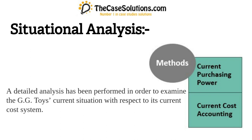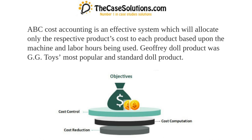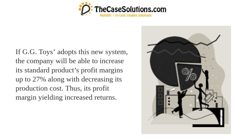A detailed situational analysis was performed to examine GG Toys' current situation with respect to its cost system. In the Chicago plant, GG Toys is recommended to change its cost accounting procedure, as standard product production costs have increased under the current system. ABC cost accounting is an effective system that allocates only the respective product costs based on machine and labor hours used.